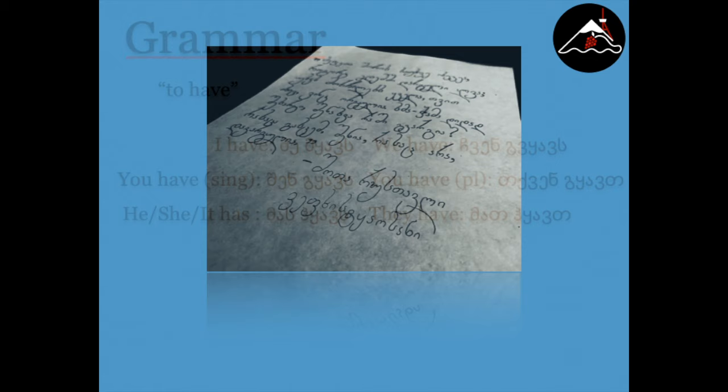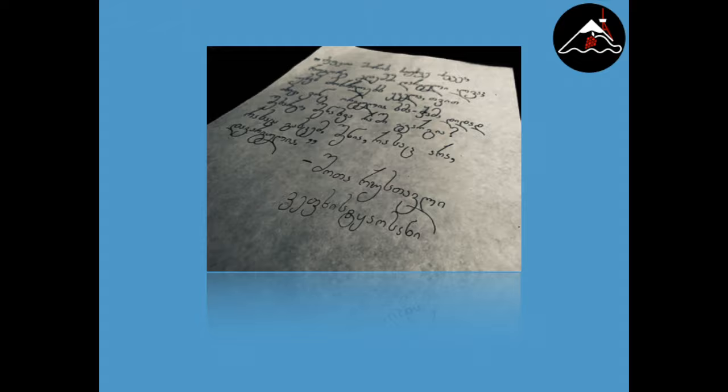When asking a question or making a sentence, the verb usually goes at the end of the sentence. For example, to ask 'Do you have a sister?' you would ask, 'Da Gkavs?'